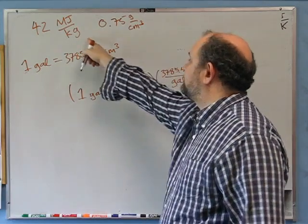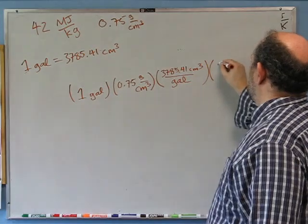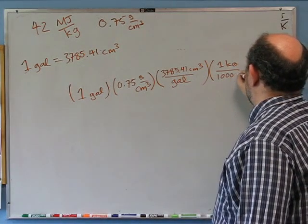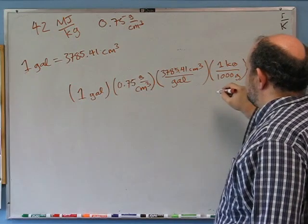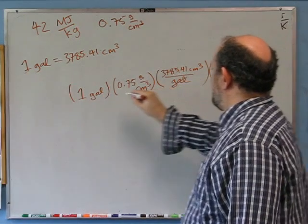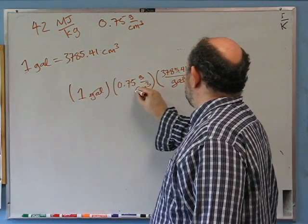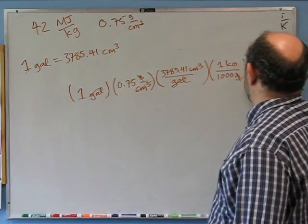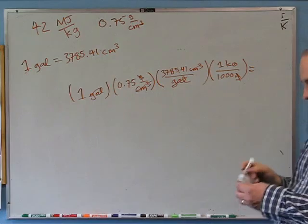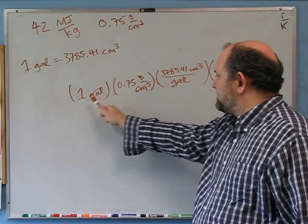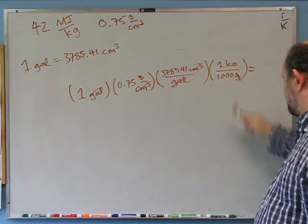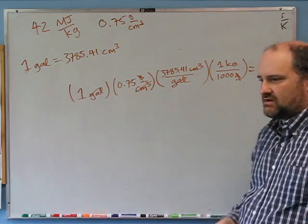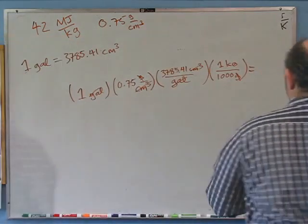And while I'm here, notice that's kilograms but this is grams. I'm going to put in another unit conversion of one kilogram per 1000 grams. Let's cancel our units: gallons cancel gallons, centimeters cubed cancel centimeters cubed, grams cancel grams — yes, I get something in kilograms. So one gallon of gas works out to 2.839 kilograms.